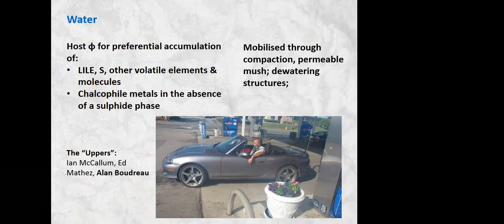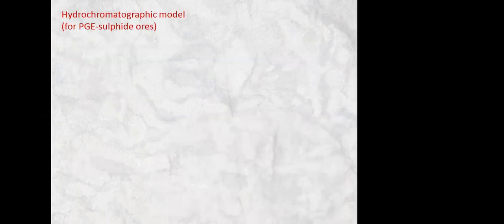Here is Alan in North Carolina in his midlife crisis mobile here from a few years ago. So here's a model of Alan's that's a quite elegant explanation for the progressive scavenging of the platinum group metals, which I will walk through here.